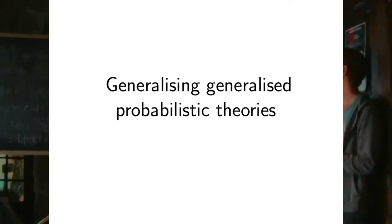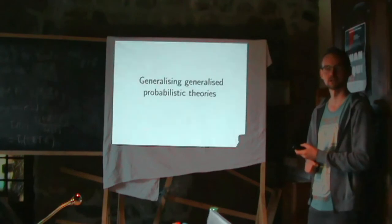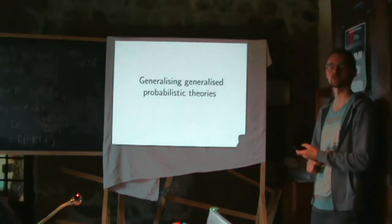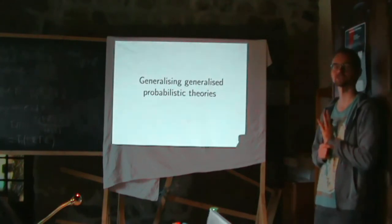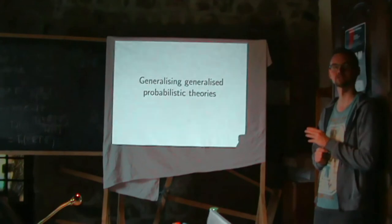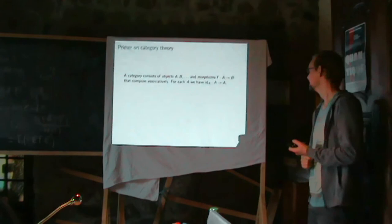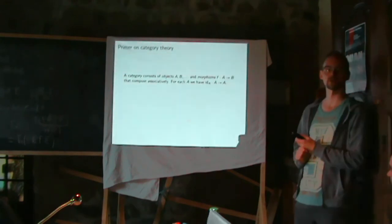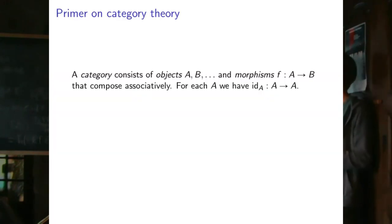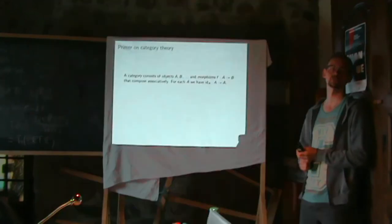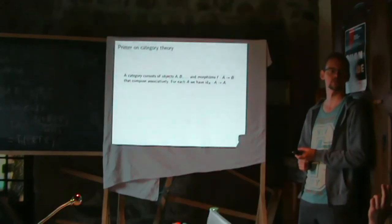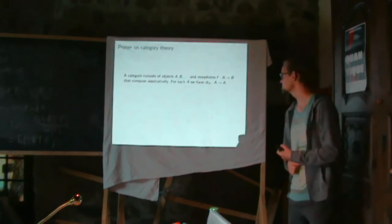Now I want to talk about generalizing probabilistic theories by replacing the real numbers. This will get much more abstract. First, a little primer on category theory. Who really knows what a category is? About half the audience. Very briefly then: